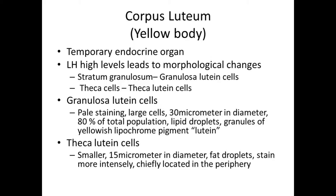The corpus luteum has two types of cells. Granulosa lutein cells, which are the most numerous, larger, and pale-staining, having granules of lutein. Theca lutein cells, which are smaller than granulosa lutein cells, stain intensely, and are chiefly located in the periphery.